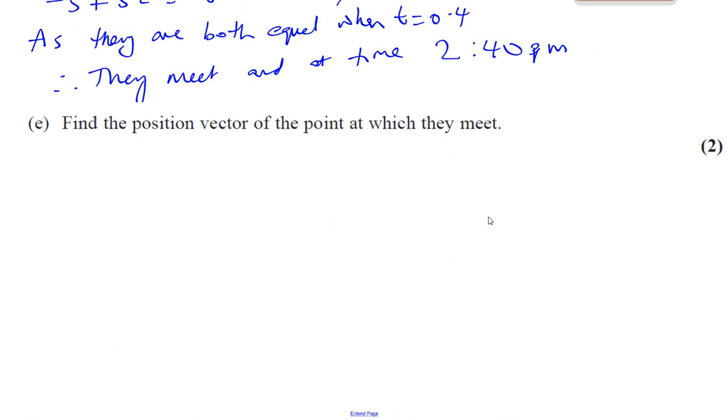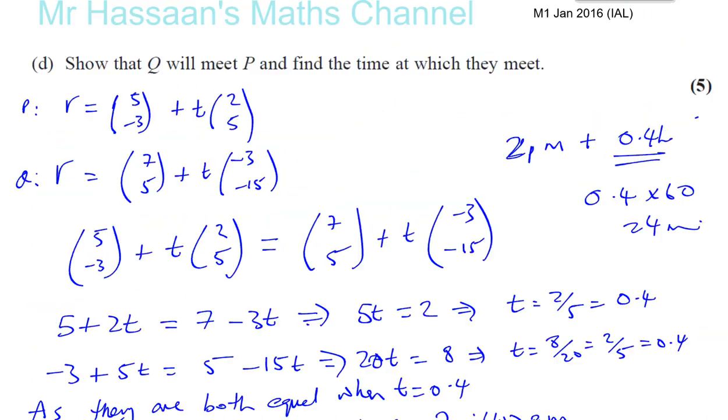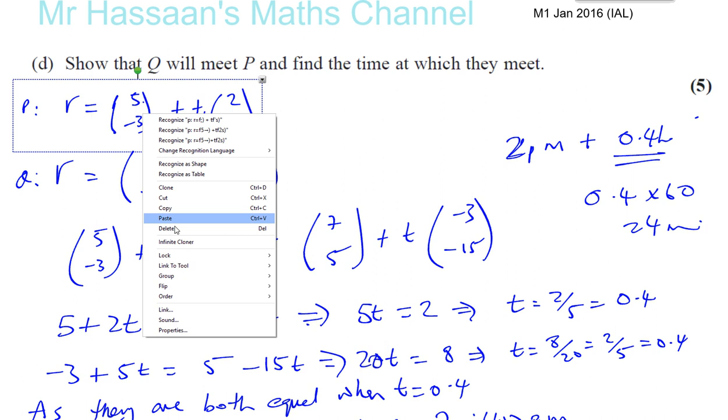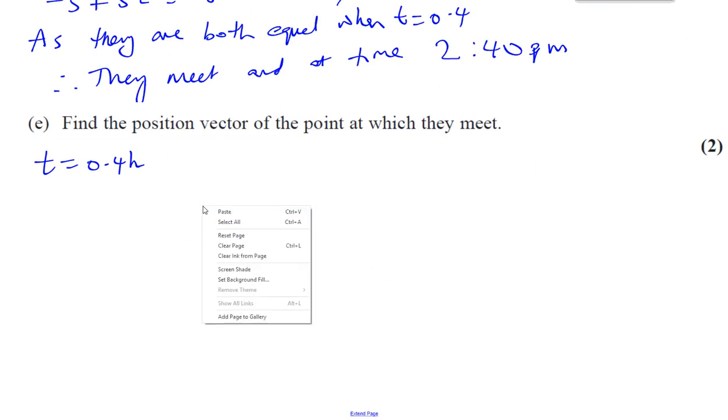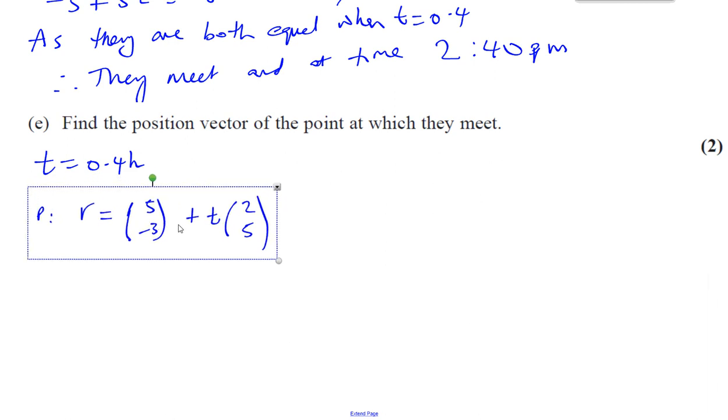Part E is actually pretty much based on part D, quite easy to do. They've told us to find the position vector at the point at which they meet. So here we have, we know they meet when T equals 0.4, 0.4 hours. So now what we can do is we can go back and take one of those two equations, either one. For example, let's take for P. So let's take this equation for P and copy and paste it down here.